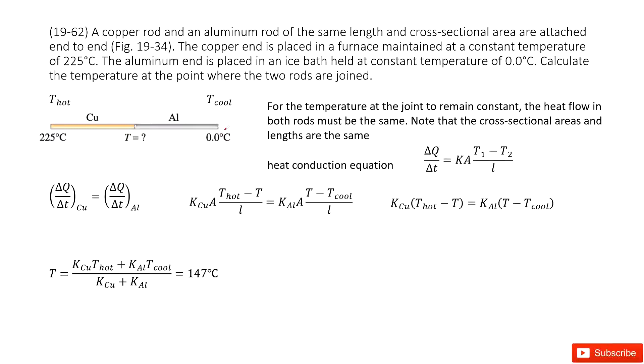Chapter 19 is about heat, the first law of thermodynamics. So you can see this is a problem about heat conduction. We have a copper rod and aluminum rod of the same length. The cross-sectional area is the same. They attach end to end.